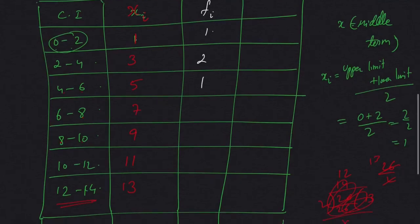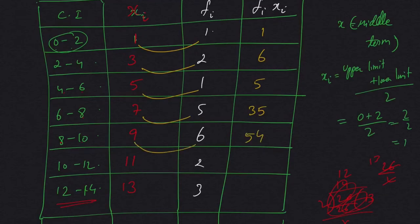Next, for direct method it's very simple - just find out the product of f and X. That is: 1×1=1, 3×2=6, 5×1=5, 7×5=35, 9×6=54, 11×2=22, 13×3=39.